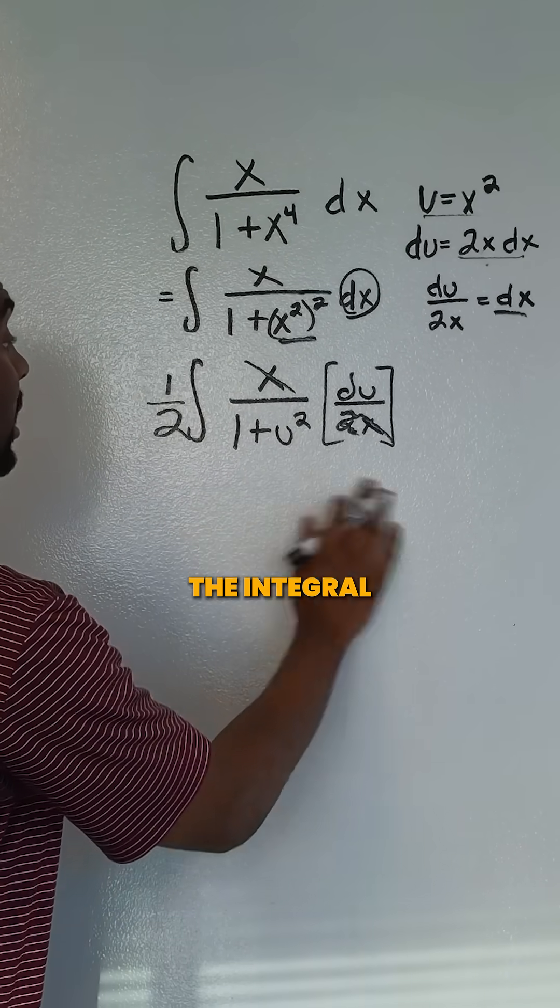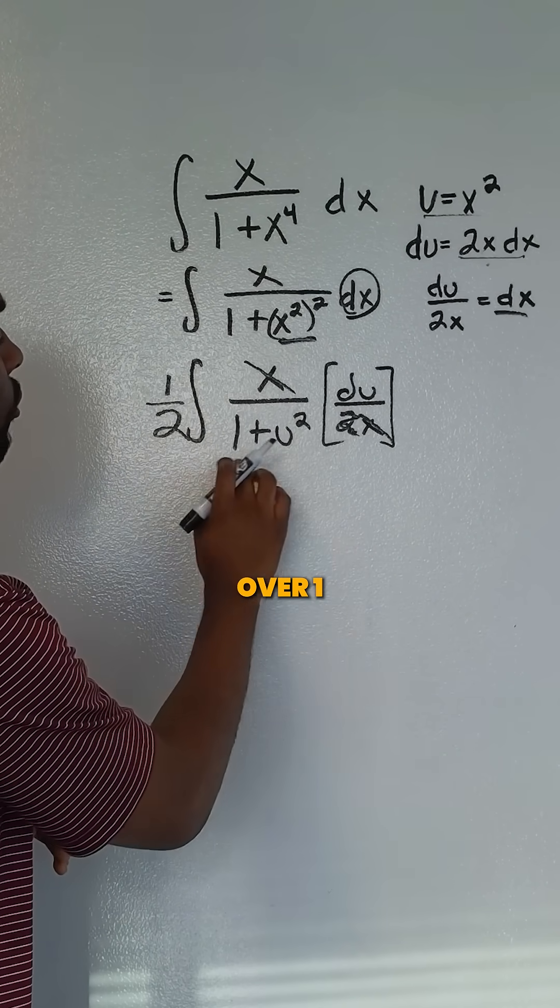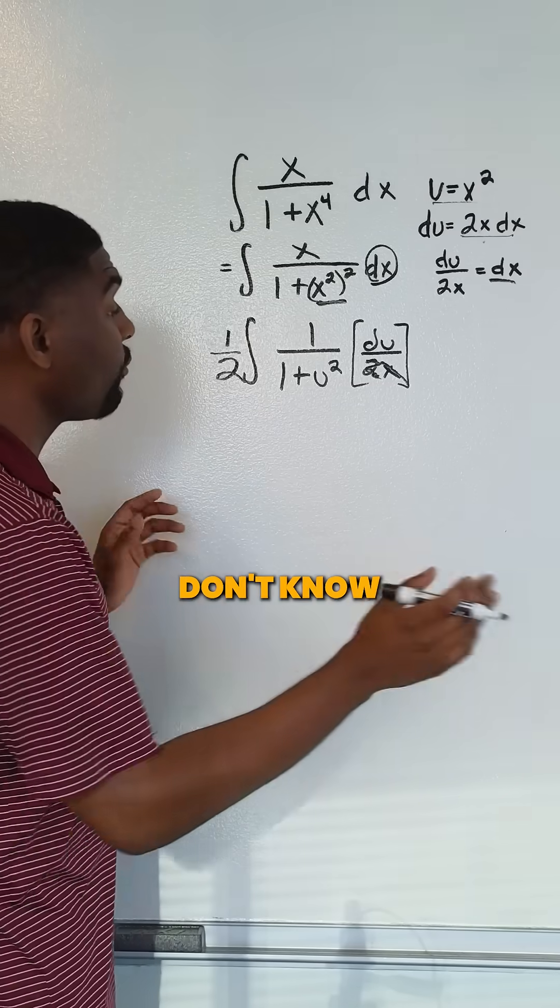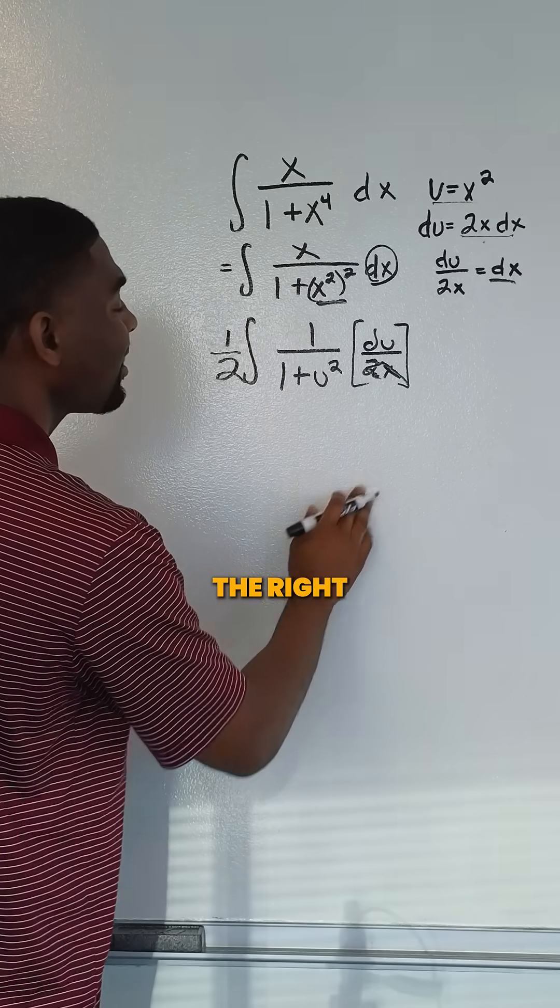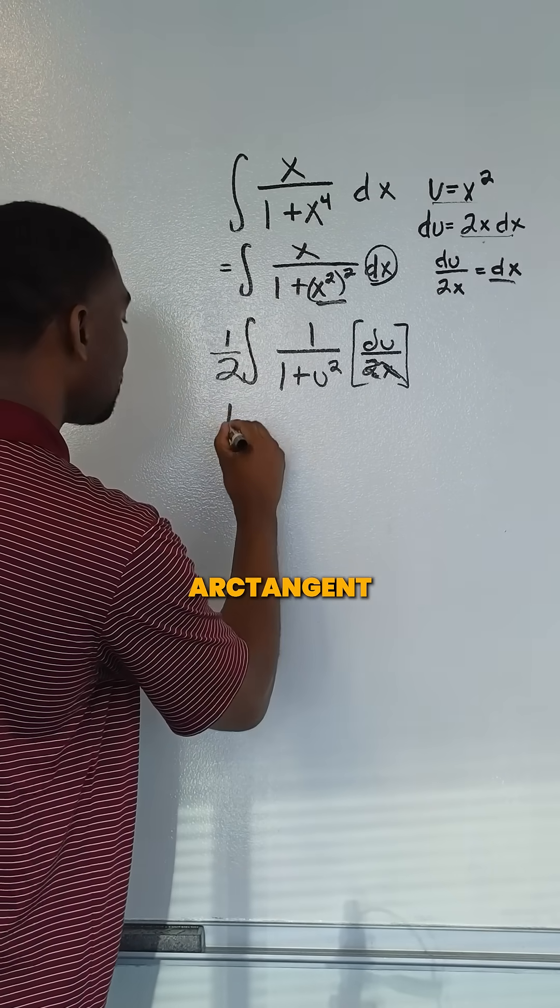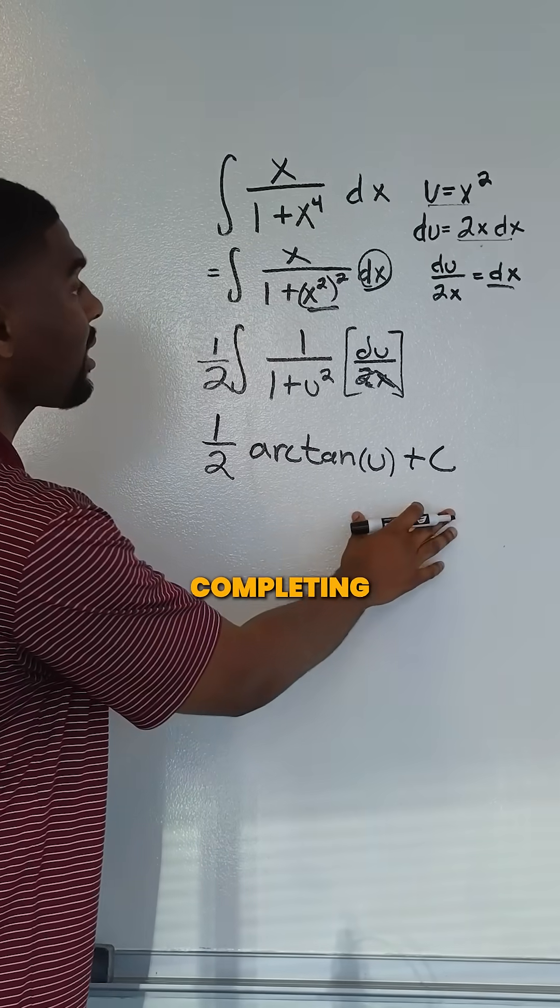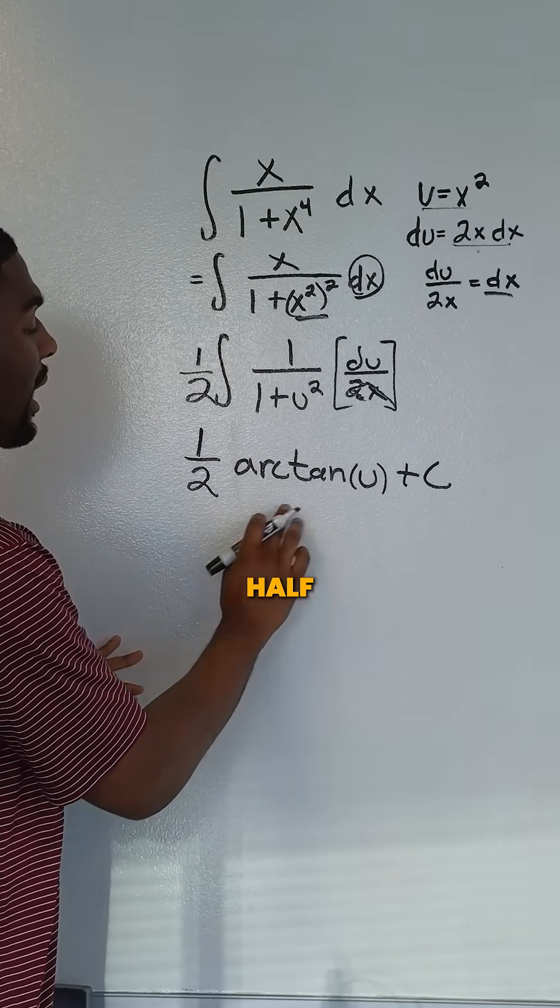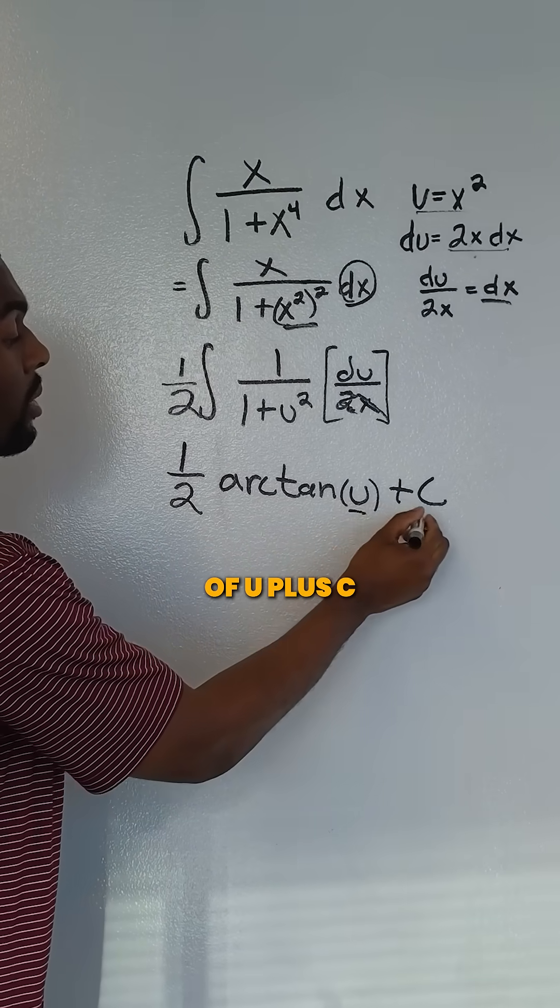Now we can simply take the integral of 1 over 1 plus u squared. If you don't know what that integral is, the right answer there is going to be arctangent. So now we're almost done completing this integral. We get one half arctangent of u plus c.